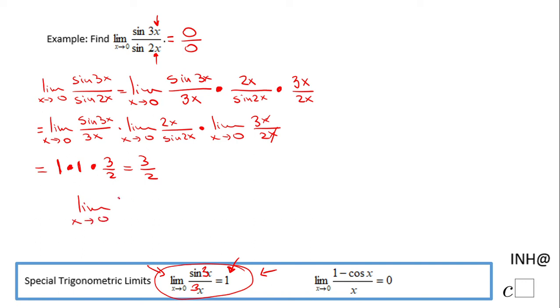So the final answer for our problem is 3 over 2. So the limit when x approaches zero of sine of 3x over sine of 2x is 3 over 2.